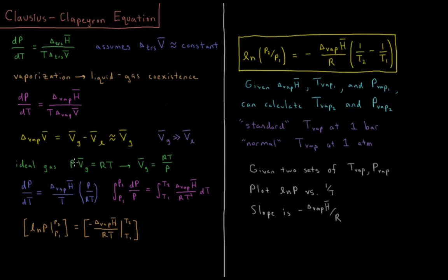For an ideal gas, we have PV̄ equals RT. From PV equals NRT, V̄ is V over N. So the molar volume of an ideal gas is equal to RT over the pressure.